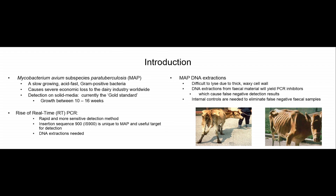DNA extractions are needed if you want to use PCR or real-time PCR. MAP DNA extractions are kind of difficult because MAP has a thick, waxy cell wall. And DNA extraction from fecal material has the downside that it will actually yield PCR inhibitors as well, and these PCR inhibitors will cause false negative detection results.